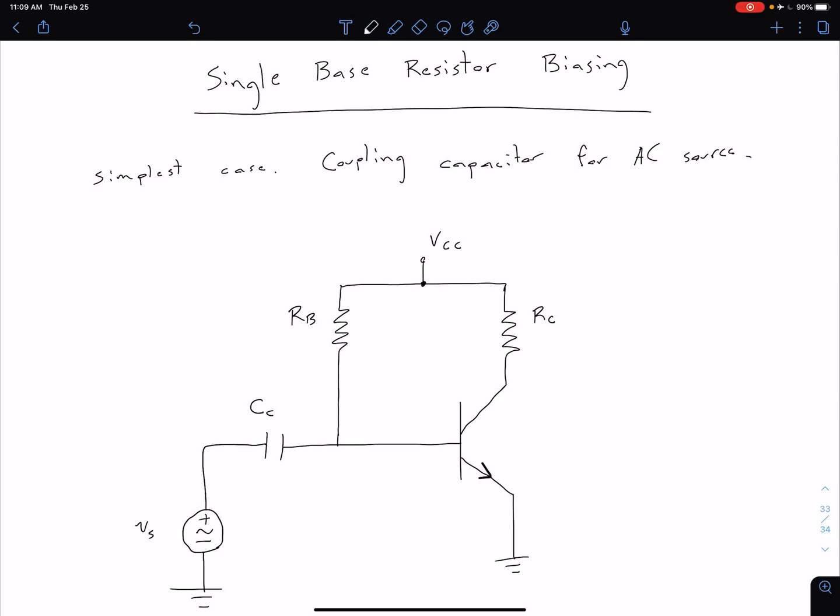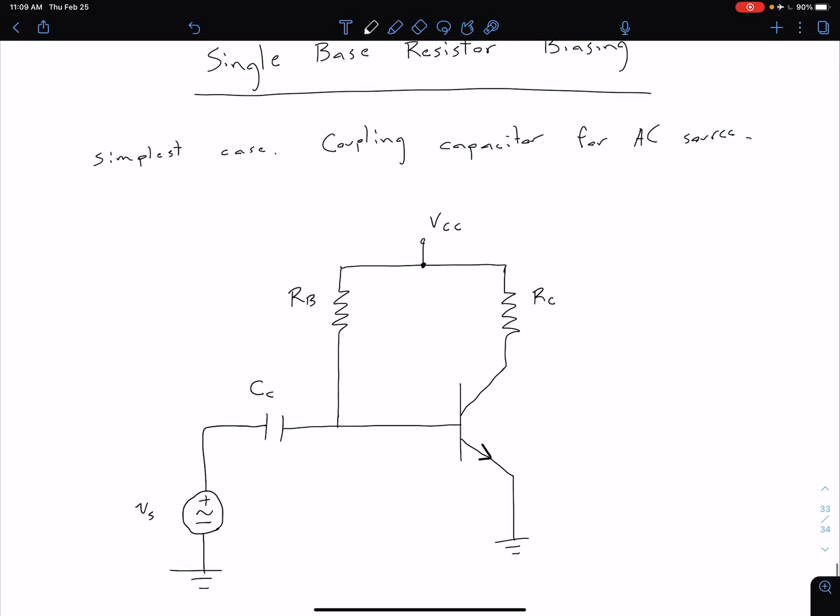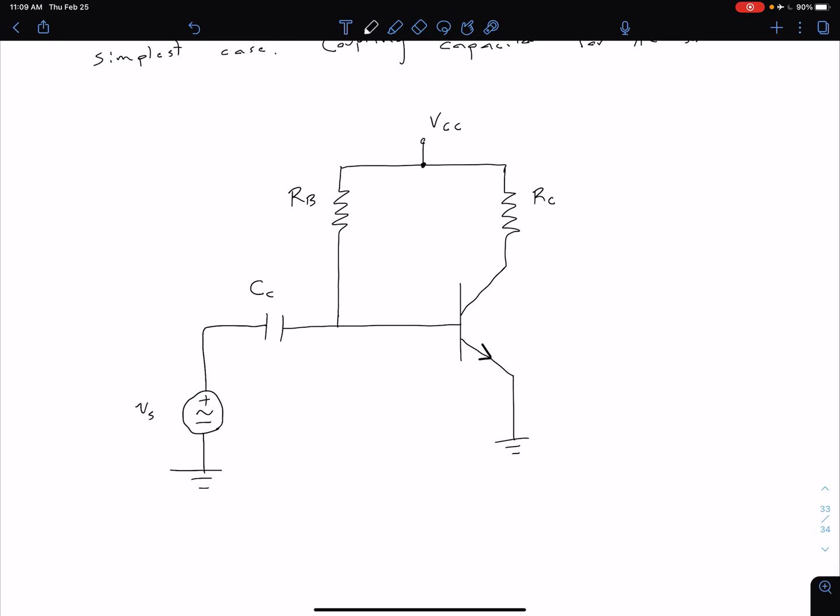The first biasing scheme we're going to look at is single base resistor biasing. This is the simplest case where we're using a coupling capacitor to connect our AC source to our transistor circuit. I've got the simple diagram shown here.